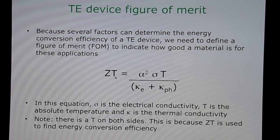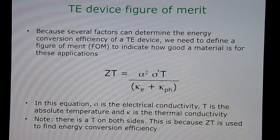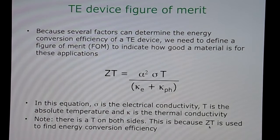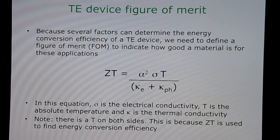A common question is: why is there a temperature T on both sides of this equation? Why don't we simply cancel T and write Z equals alpha squared sigma divided by the sum of the two kappas? The reason is that we use ZT to find the energy conversion efficiency for a TE device, and it is simply more convenient to write the FOM as ZT.